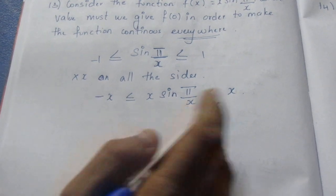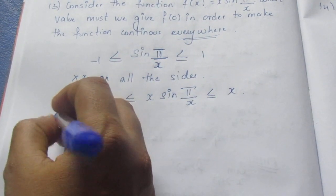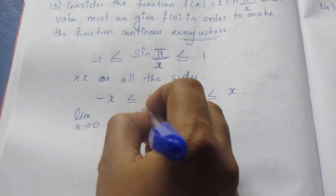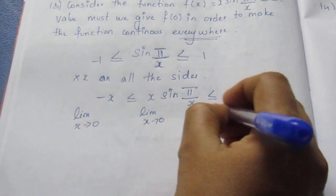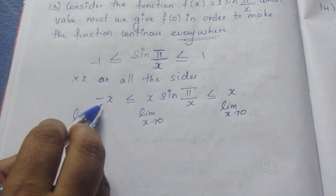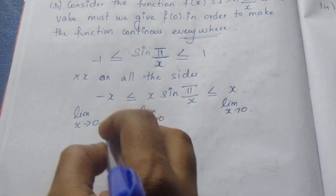Now let's take the limit. As x tends to 0, we have the limit on both sides. We will substitute the value 0.